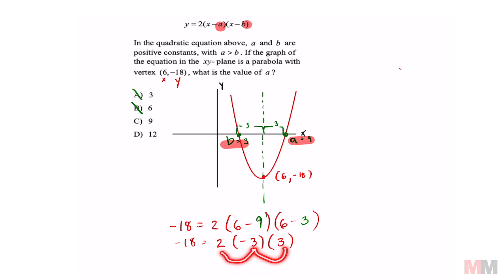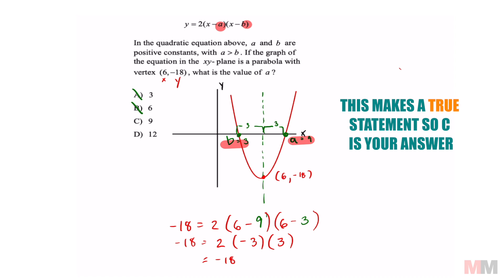2 times negative 3 times 3 does equal negative 18, meaning that my answer choice is c.